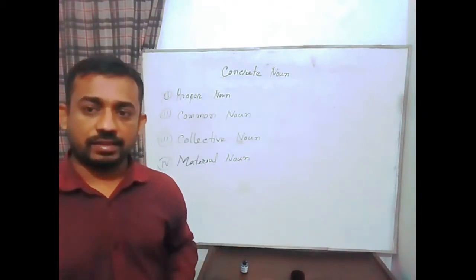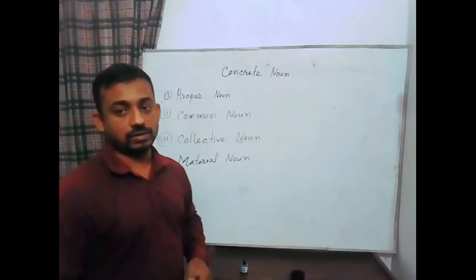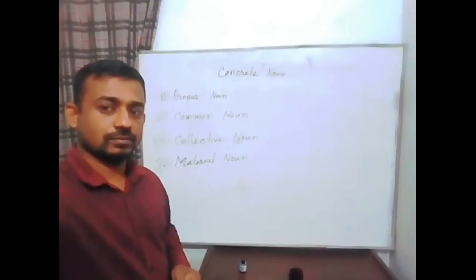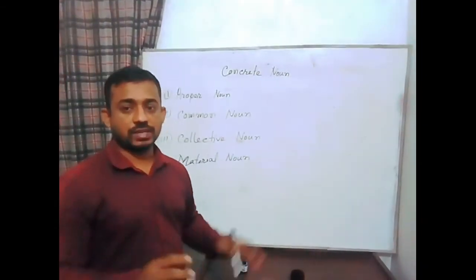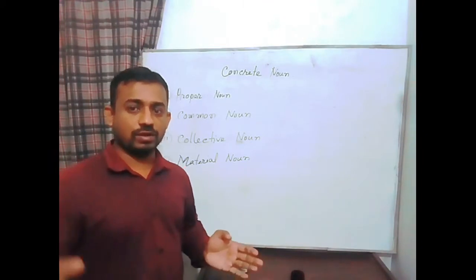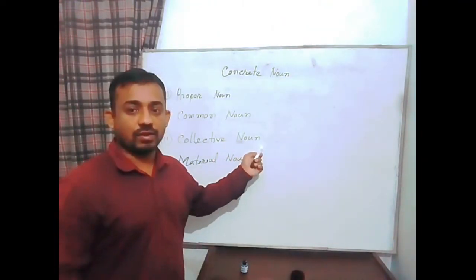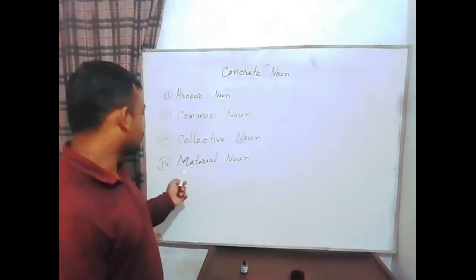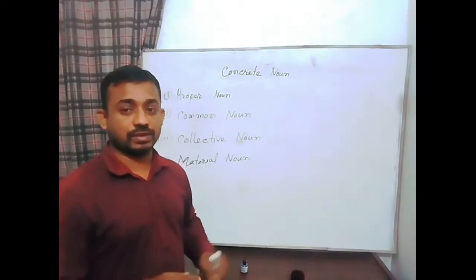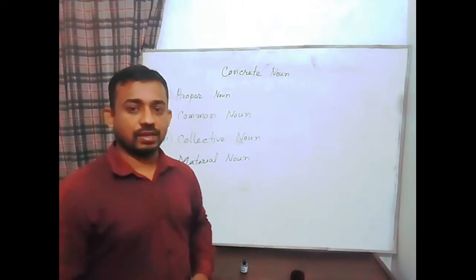Now, come to collective noun. Collective noun — for example, we can see 'army'; more than one person must be in an army. It may also be a team or a class, etc. This type of noun is called collective noun. Now come to material noun. Anything's raw material name is called a material noun — for example, oil, sugar, milk. This type of noun is called material noun.